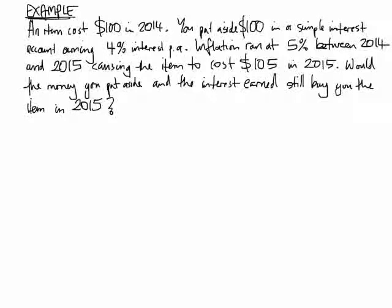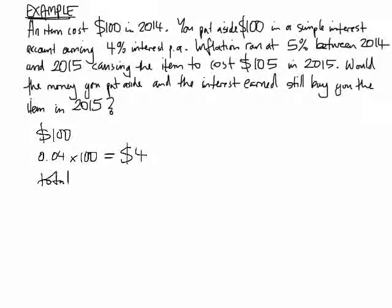Here's an example of how buying power can be affected because of inflation. The money you have in that account is $100, and you're going to get 4% of that as interest at the end of the year. So in total, your investment is going to end up as $104 in 2015. Is that going to buy you the thing you saved up for? No — because its price has increased to $105 and your investment only reached $104.